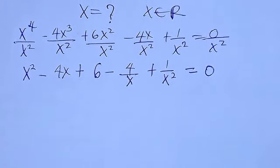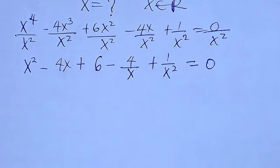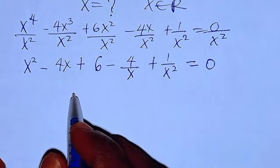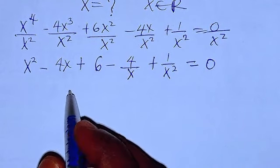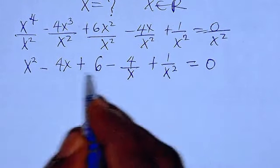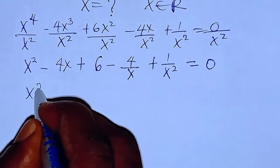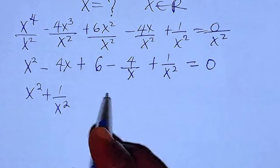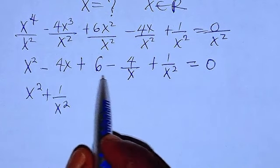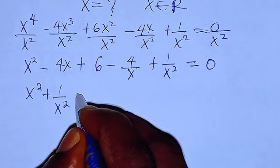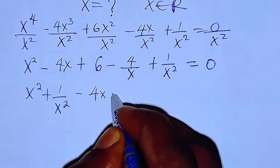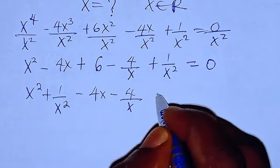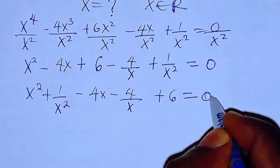So now we move on and do some rearrangement. We have x squared and 1 over x squared — I can take these together: x squared plus 1 over x squared. Then I can take these together: minus 4x minus 4 over x, then plus 6 equals 0.